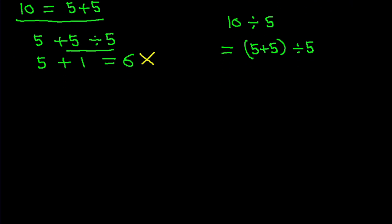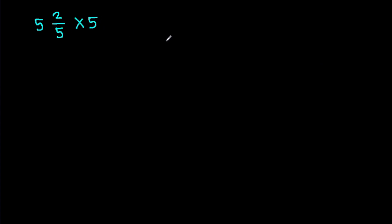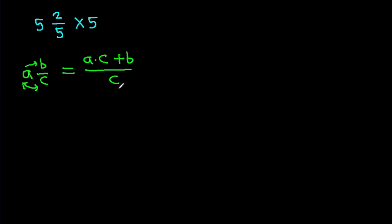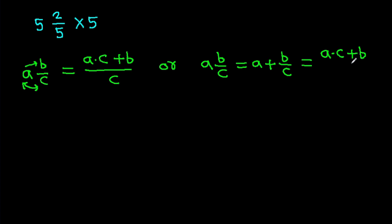So for 5 and 2 over 5 times 5 — the rule is: a and b over c equals a times c plus b, all over c. We can also write a and b over c as (a plus b over c), which again gives a times c plus b over c.